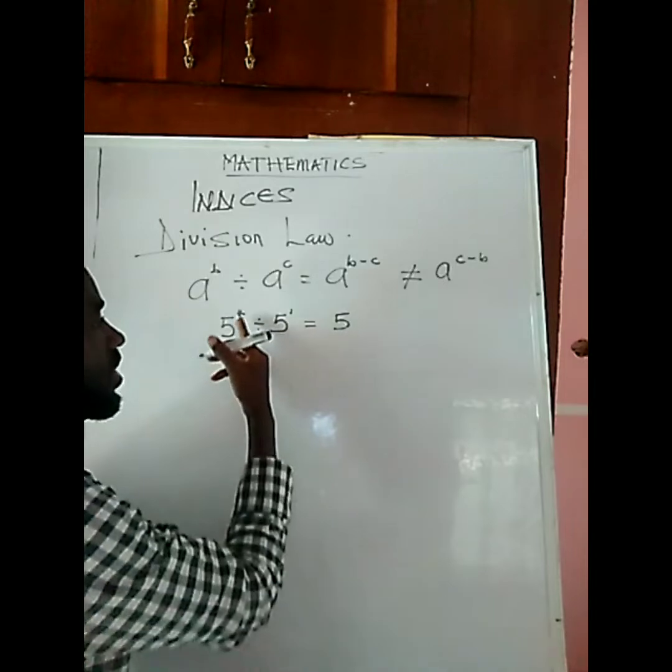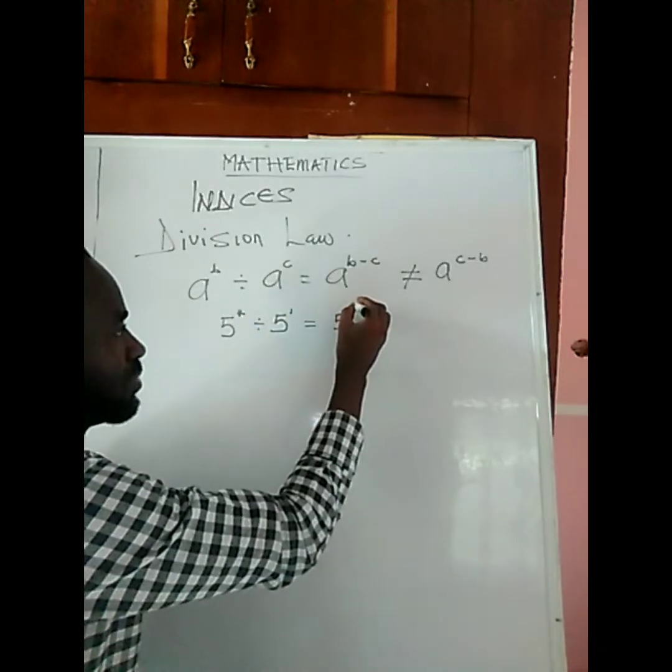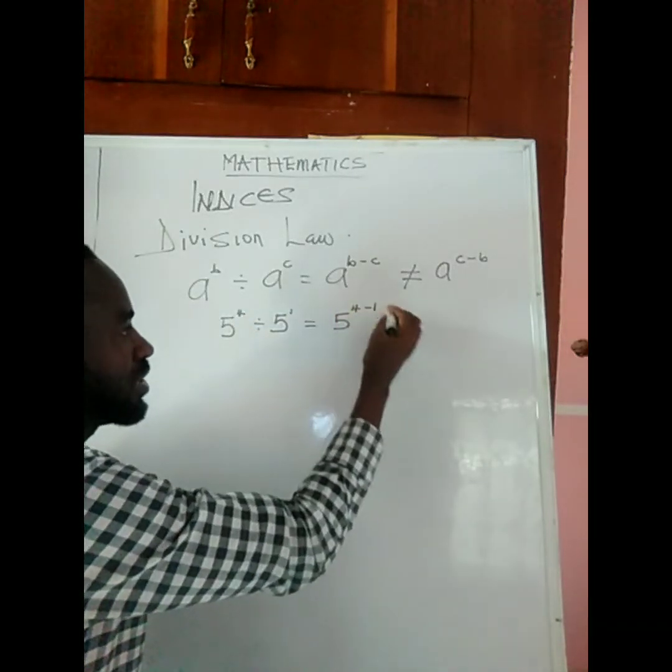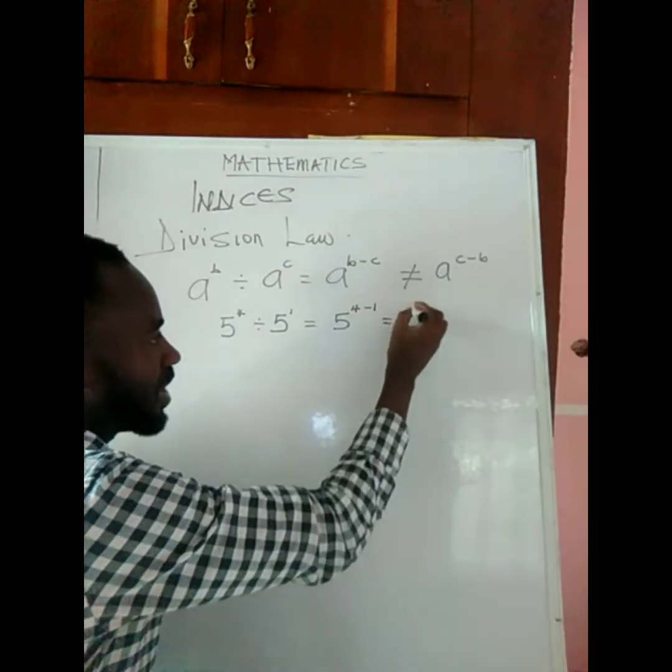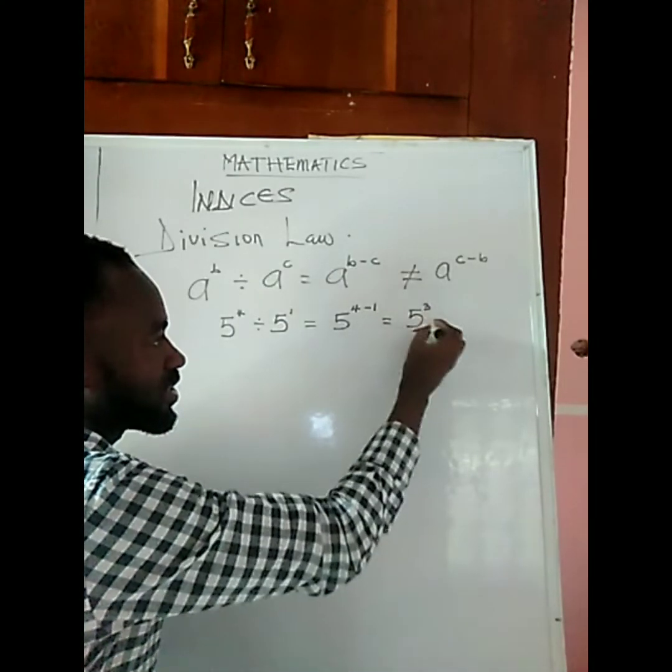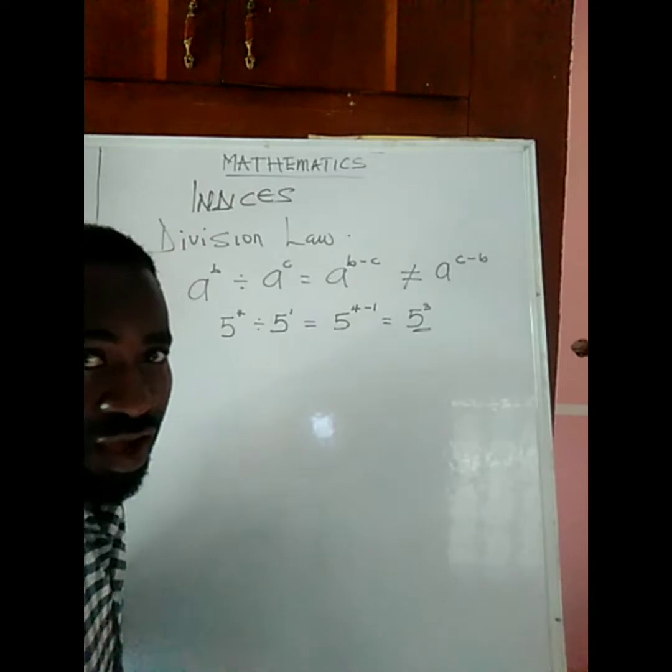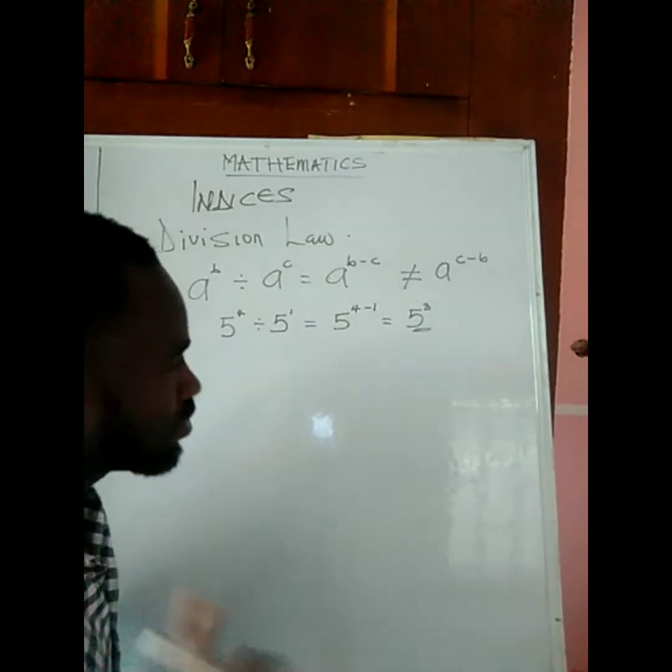We take the base which is 5, and then we subtract the powers, which is 4 minus 1, and that is 5 to the power of 3. This is our solution.